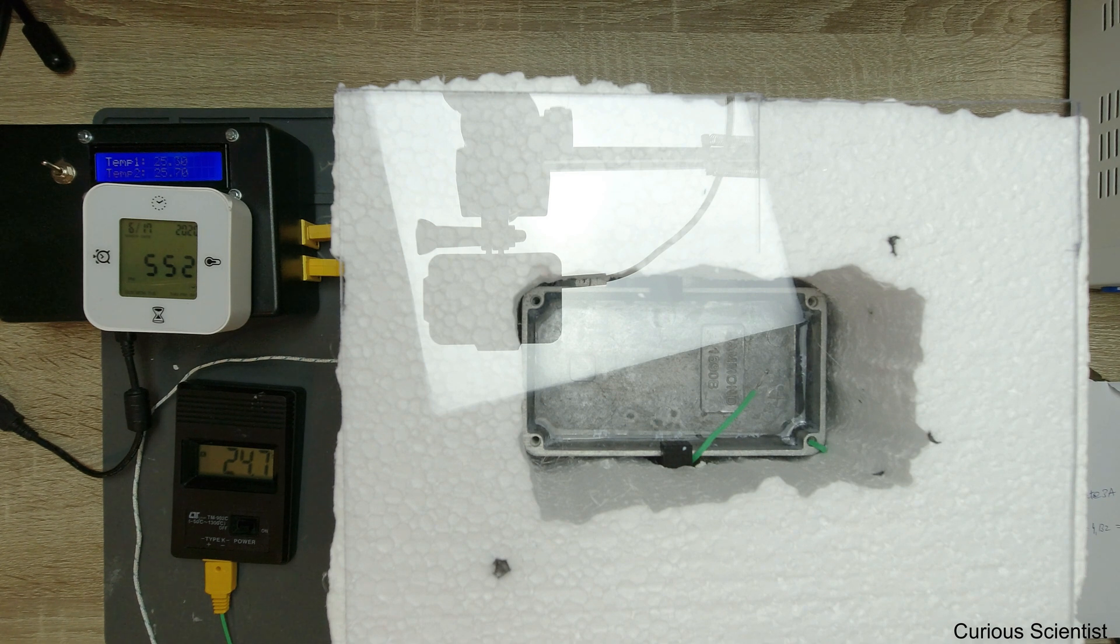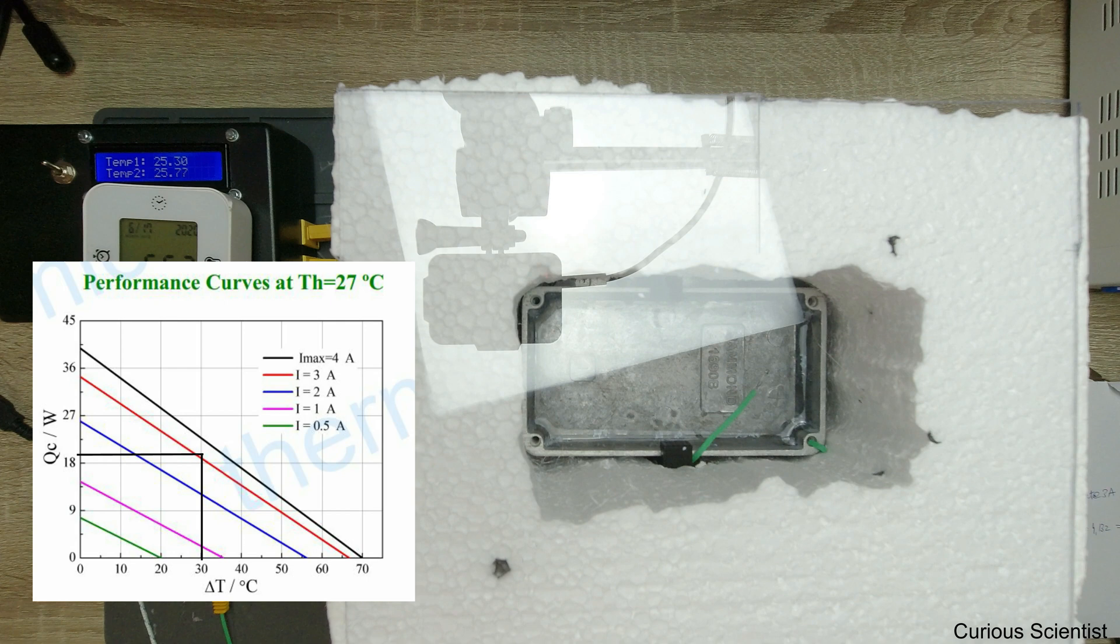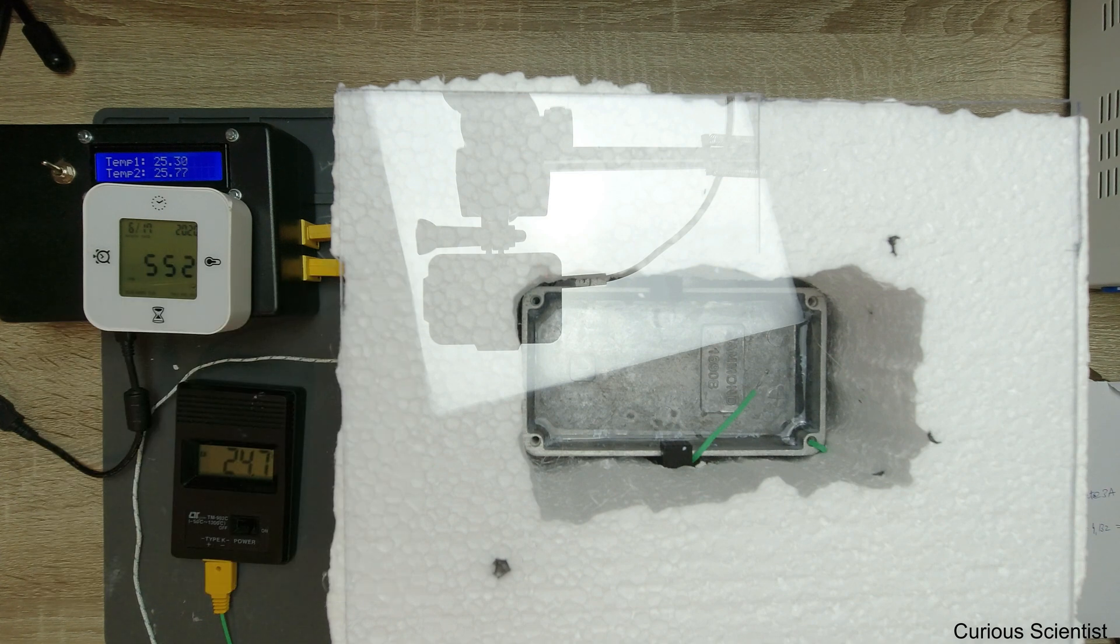At 30 degrees Celsius delta T, I read the cooling power at three amperes and that gave me 19 watts. It's not a huge number, but this is a very small unit.